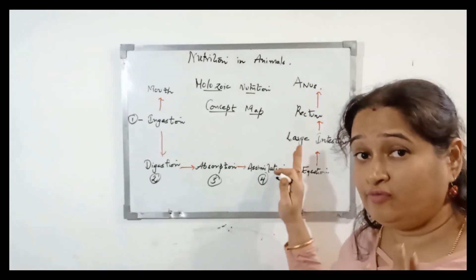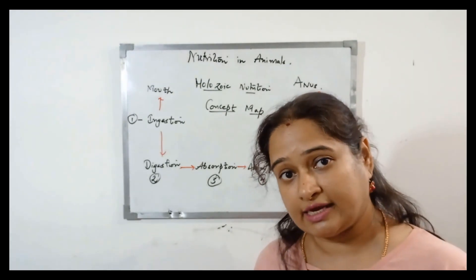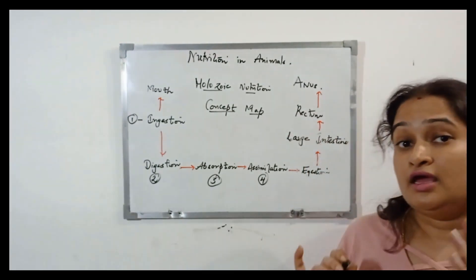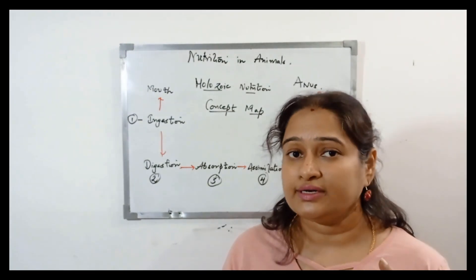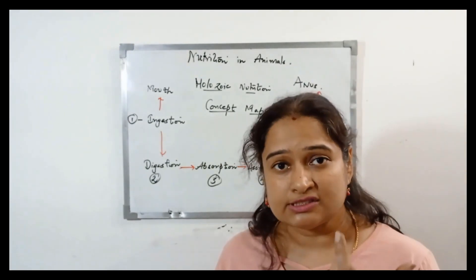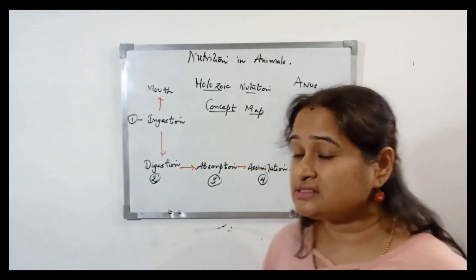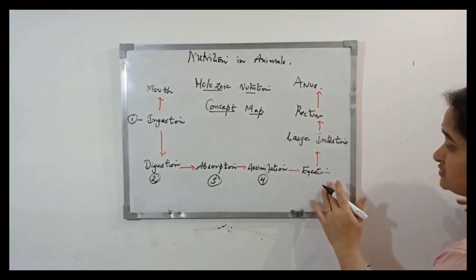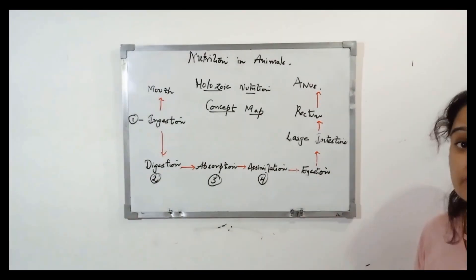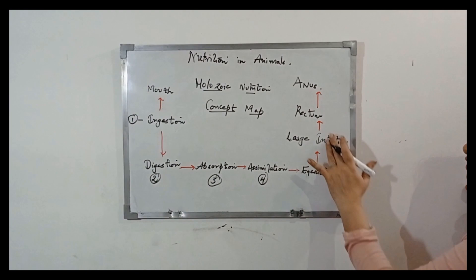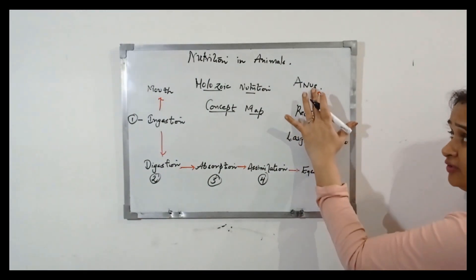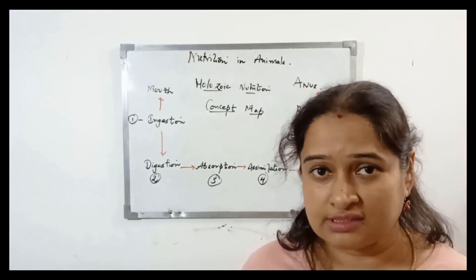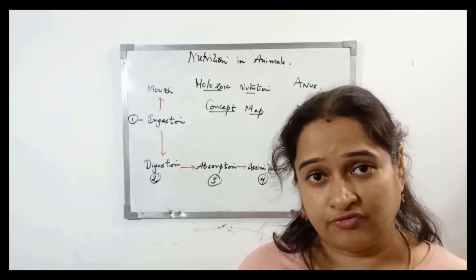The part of food left undigested in the small intestine enters into the large intestine. In the large intestine, water and salts are absorbed from the undigested food, and the resulting semi-solid food is stored in the rectum and then thrown outside the body as feces whenever we go to the toilet.